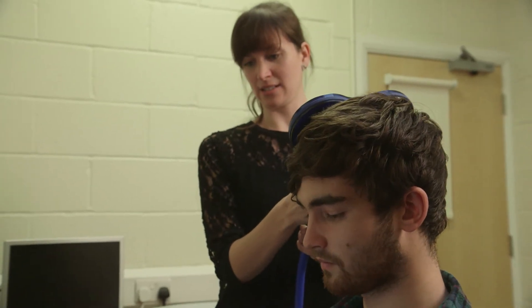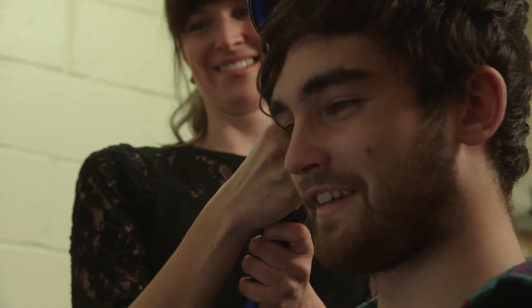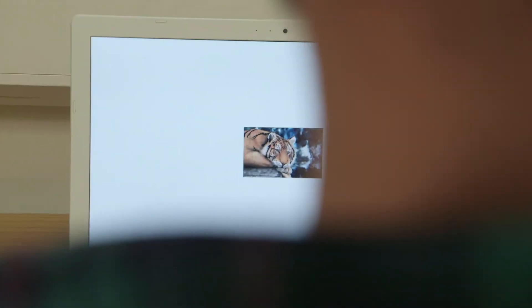One example of that would be last year we were learning about the social brain and we used the magnetic thing over our heads and it made us move different parts of our bodies, so it showed what part of the brain was for what part of the body.